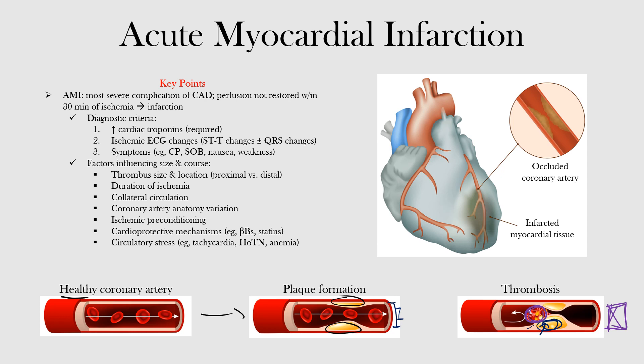The duration of ischemia is also important. Beyond 30 minutes, infarcted tissue begins to appear, so the greater the time of ischemia, the more extensive the infarction will be. Collateral circulation — coronary arteries connected and able to receive blood from one another — can be effective in reducing the degree of ischemia.